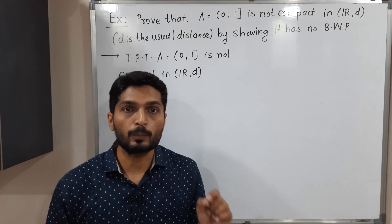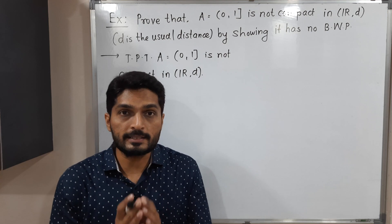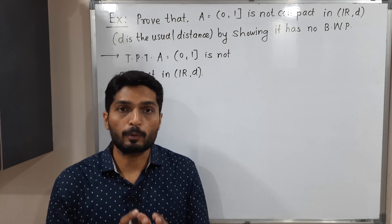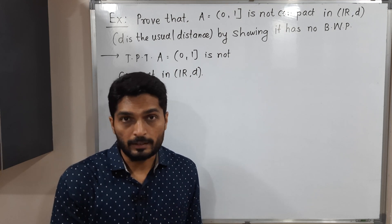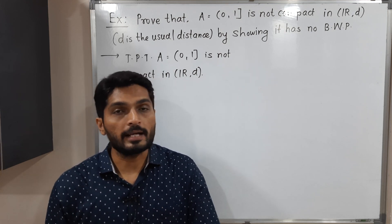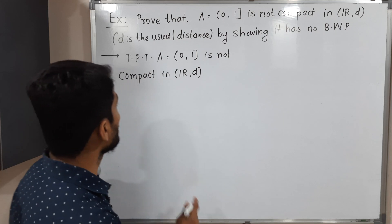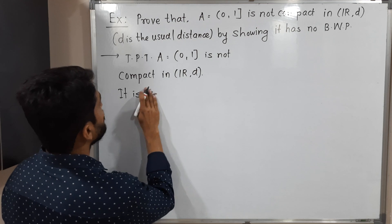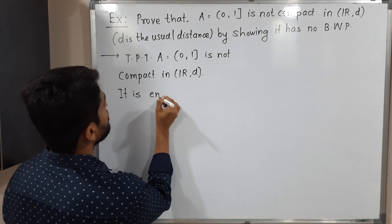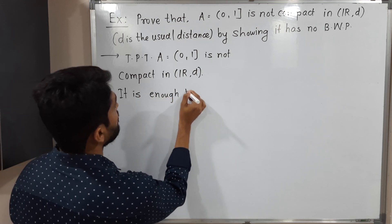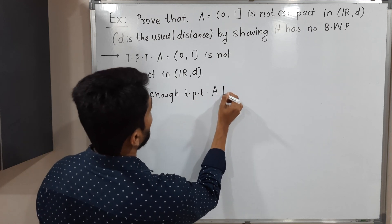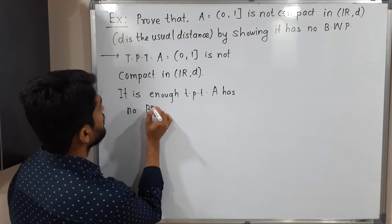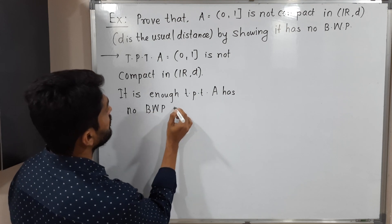BWP means the Bolzano-Weierstrass property. This property says every infinite set has a limit point. So it is enough to prove that A has no BWP in ℝ^d.